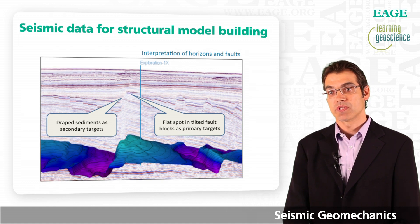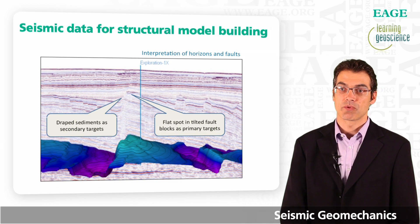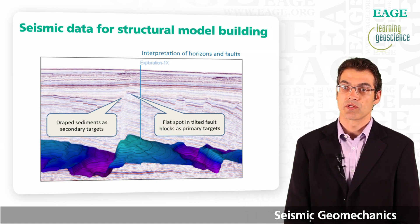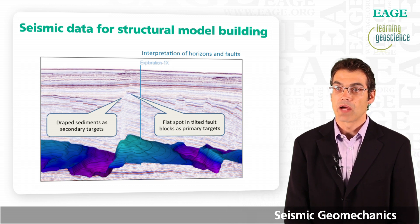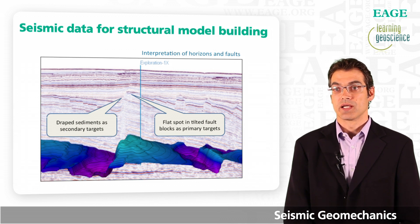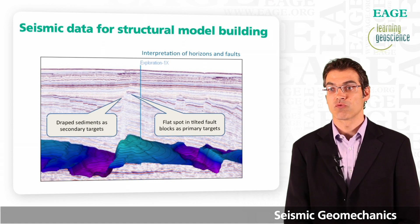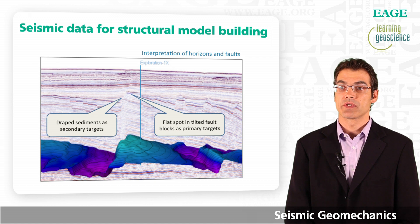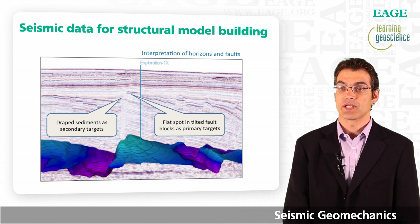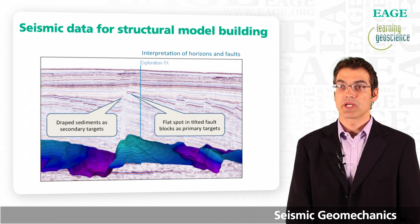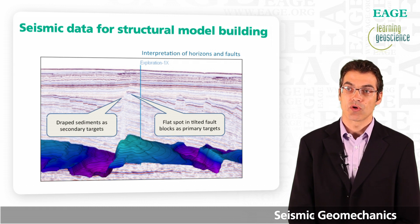I want to take you through this workflow and show how colleagues and I have executed it on an exploration dataset from Northwest Australia. Along this profile you can see 30 kilometers of seismic data with clearly visible horizons and faults. There is a flat spot in a tilted fault block — one of the primary exploration targets in the area — and draped sediments which form a secondary target. This seismic data is used for structural model building through interpretation of horizons and faults.